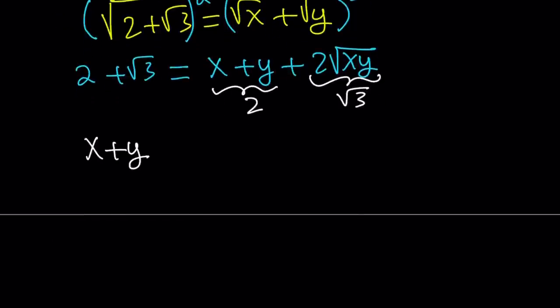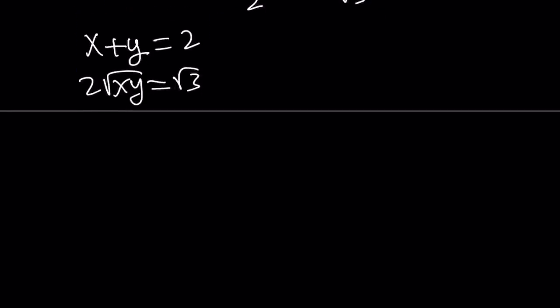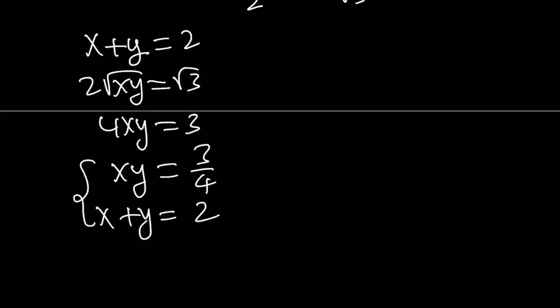And it looks like this. x plus y is equal to 2. And then 2 times the square root of xy is equal to square root of 3. If I square both sides, I get 4xy equals 3 and xy equals 3 fourths. I also have x plus y equals 2. So this is my system.